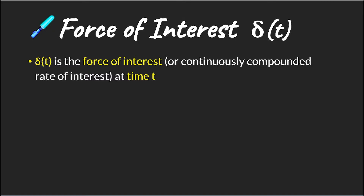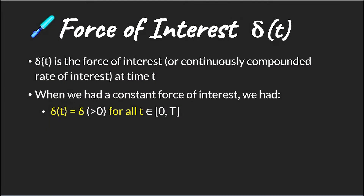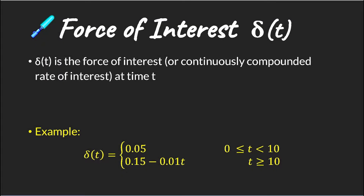We now have a force of interest that is a function of time. When our force of interest was constant we knew that over a given period what force of interest would apply throughout. We now have a case where we have a function of time, which means we have a force of interest that applies differently depending on the time period. We now want to use this force of interest function to accumulate cash flows over time, so we need to derive an appropriate accumulation factor to do this.